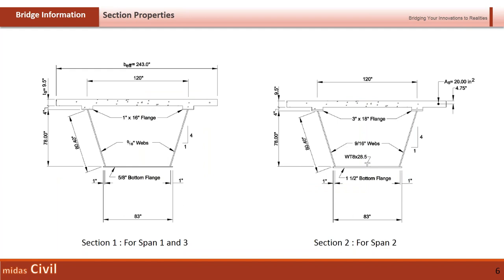In Midas, what we'll do is create tub sections with a slab and use the wizard for modeling. We have two section types: for spans one and three, we use the first section type, and for span two, we use the second type.